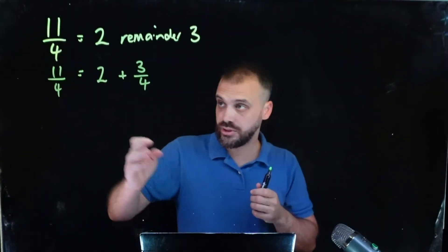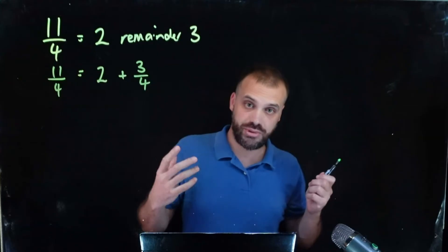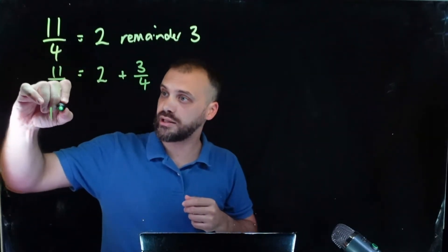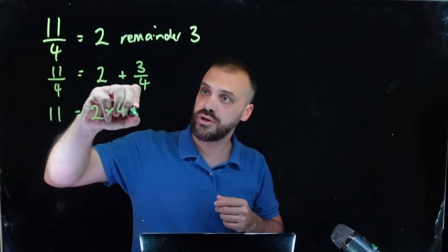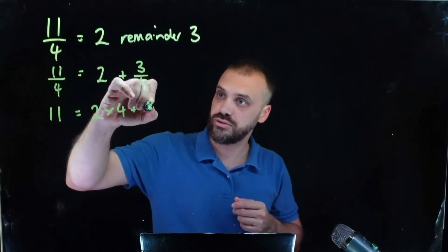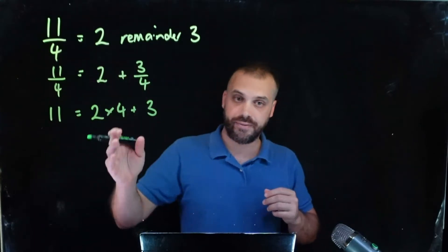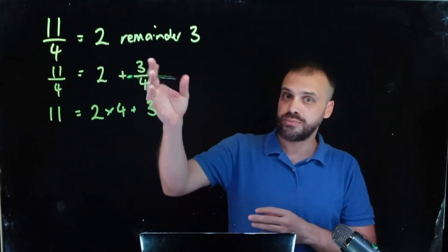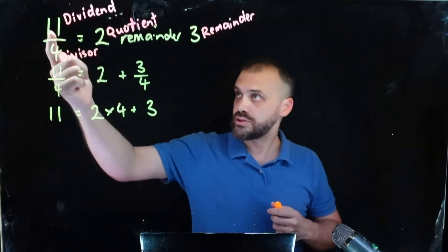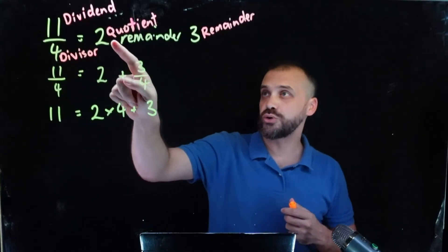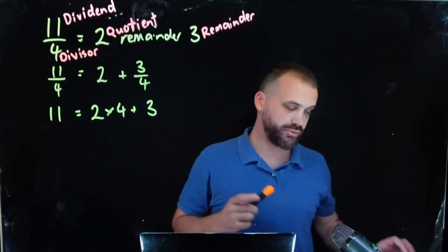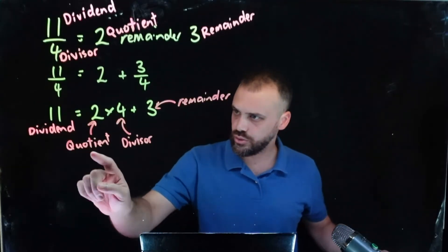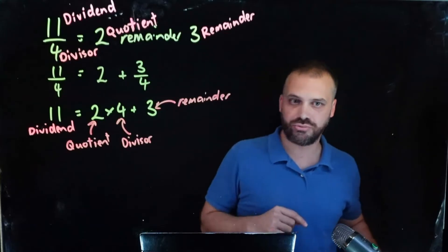Now I can multiply every term here by 4 and I get 11 equals 2 times 4 plus 3. Okay, that's pretty straightforward. Now I'm going to label some stuff up. Dividend, divisor, quotient, remainder. You really want to write all of that down but particularly write it all down right there. Dividend, quotient, divisor, and remainder.